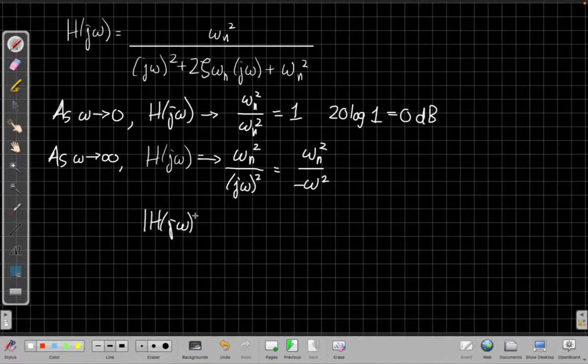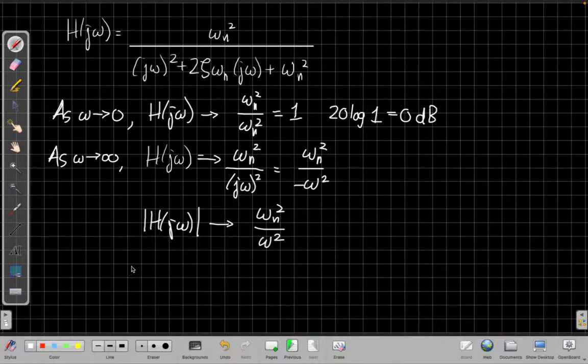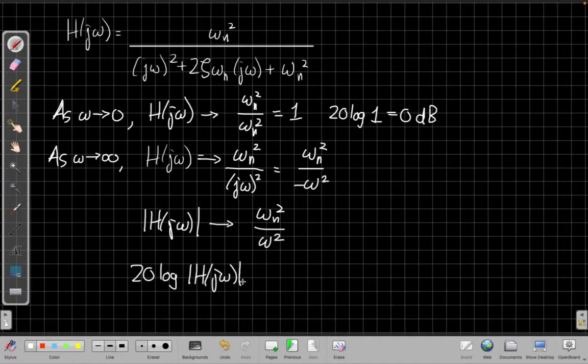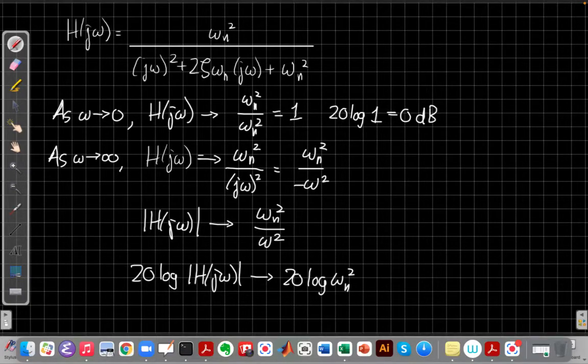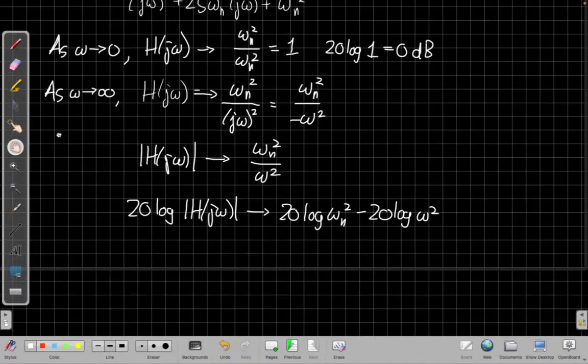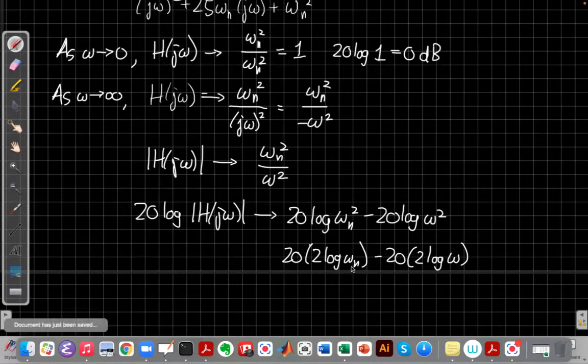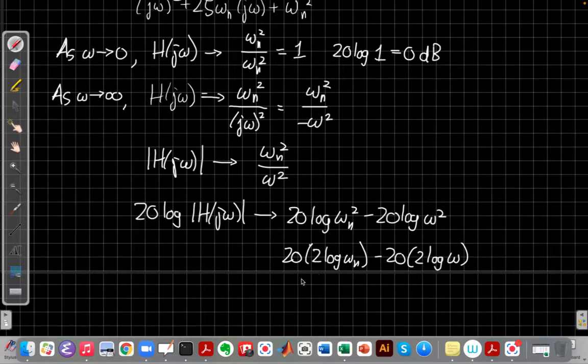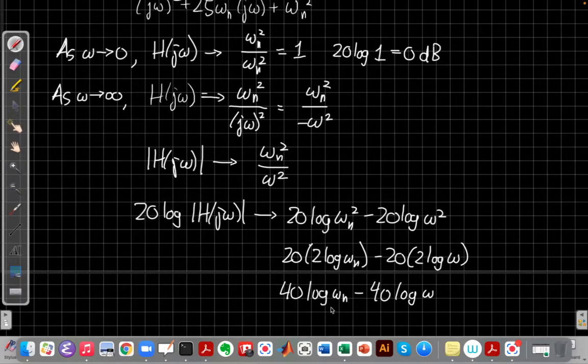Or if we square that out, the j² becomes a minus one, so I get ω_n²/(-ω²). If I look at the magnitude of h here, I just cancel the negative sign in the denominator. And now if I take 20 log of this on both sides, I get 20 log |H(jω)| approaching 20 log ω_n² - 20 log ω². But I can simplify this further because the log of something squared is 2 times the log. So as I go to high frequencies, I have something that's decaying like 40 times the log ω, which gives me a slope of minus 40 dB per decade.